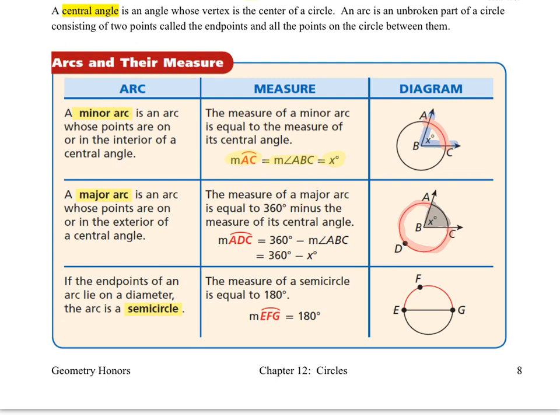This is an easier concept. If the endpoints of an arc lie on a diameter, such as E and G, then the arc is a semicircle. The measure of arc EFG is 180 degrees — we knew that because it was going to be half of a circle.